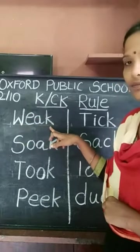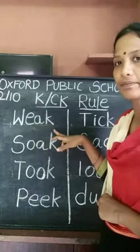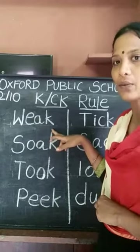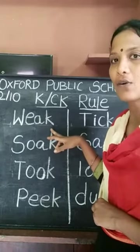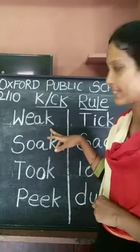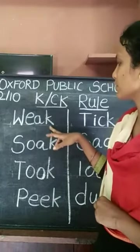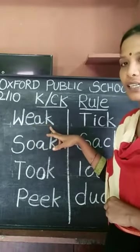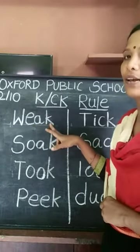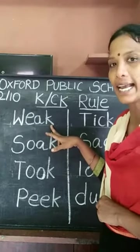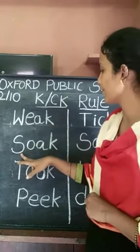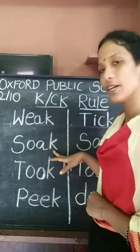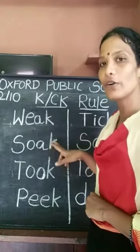Weak. When we say the word 'weak', we can hear the K sound at the end of the word, isn't it? So, when the word comes with two vowels and ends with K sound, write only K.